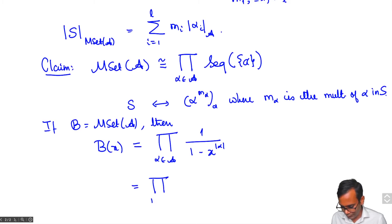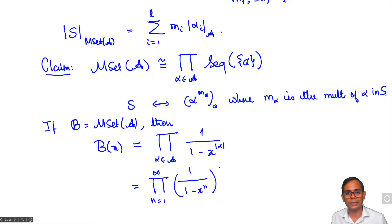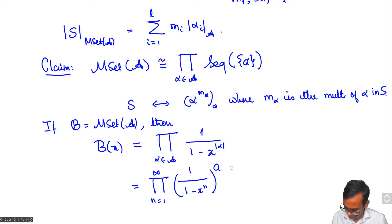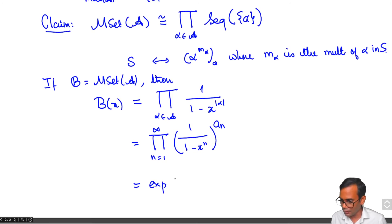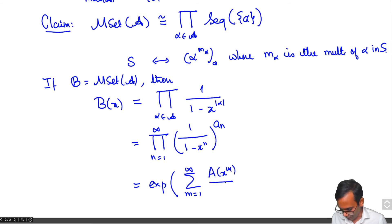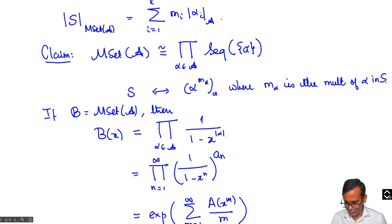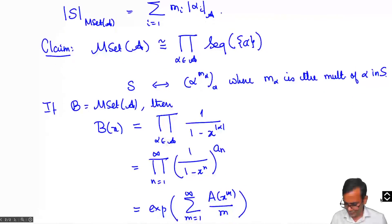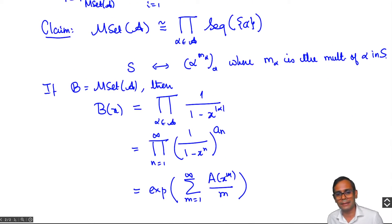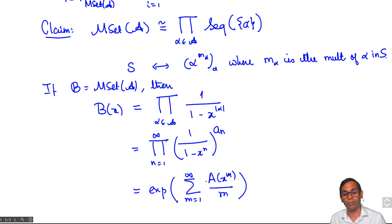We can also write the generating function of M_set(A) as the product from n=1 to infinity of (1/(1-x^n))^{a_n}, and this equals exp of the sum over m from 1 to infinity of A(x^m)/m. This last step is very similar to what was done for power sets, so I'll let you work out the details. In fact the result is a little simpler because log(1/(1-x)) equals the sum of x^m/m, which is much nicer than log(1+x).